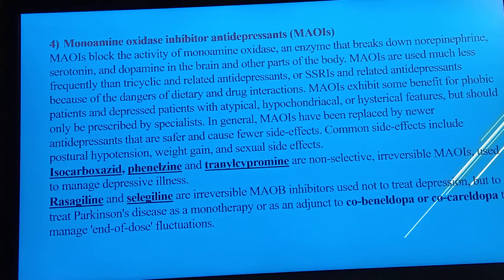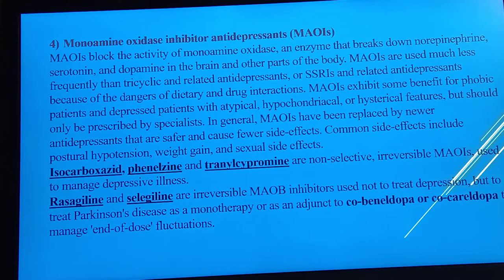The fourth classification is Monoamine Oxidase Inhibitors (MAOIs). These enzymes break down norepinephrine, serotonin, and dopamine in the brain as well as other brain receptor areas. MAOIs are used much less frequently than tricyclic antidepressants because of the danger of dietary and drug interactions.